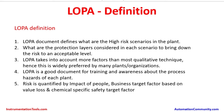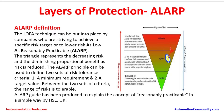Risk is quantified by three parameters: impact on people, business target factor based on value of loss, and chemical-specific safety target factor. These are the three parameters used to identify and quantify the risk. When studying LOPA, we need to understand one more acronym — ALARP, which stands for As Low As Reasonably Practicable.